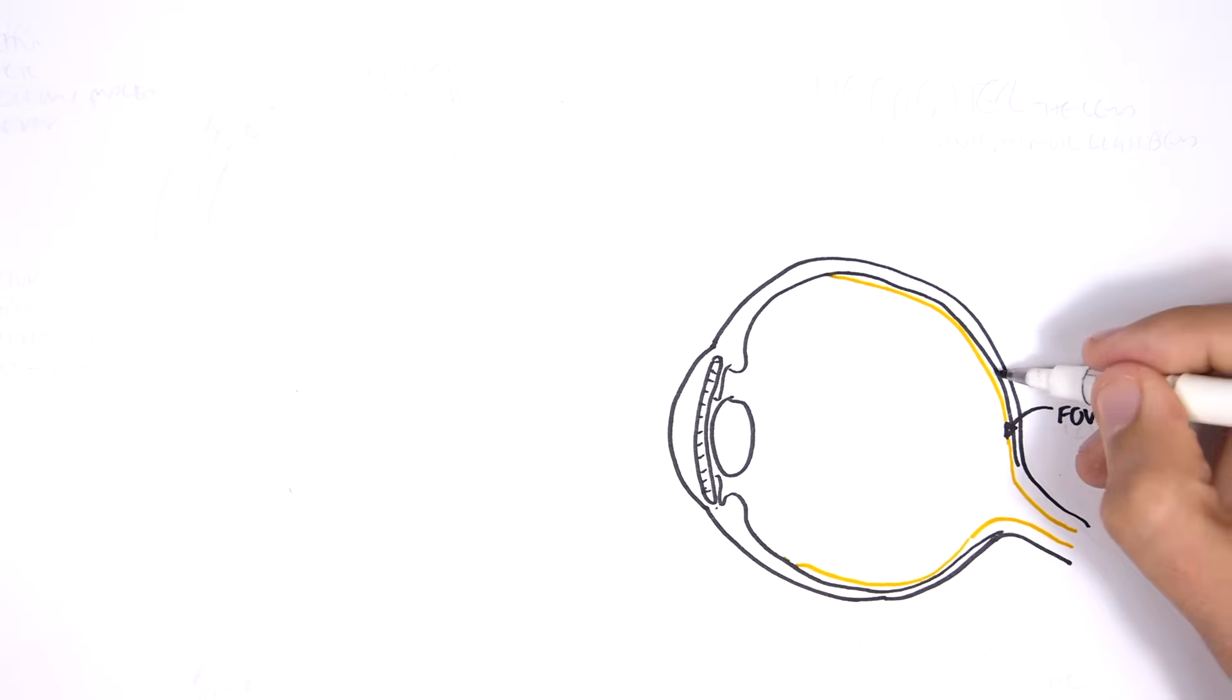Where most of the image from the pupil is captured is the fovea. The fovea is within the layer called the retina. The retina contains the photoreceptors which send information to the nerve fibers that make up the optic nerve.